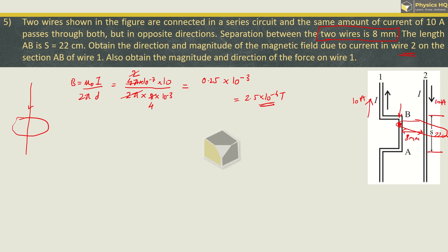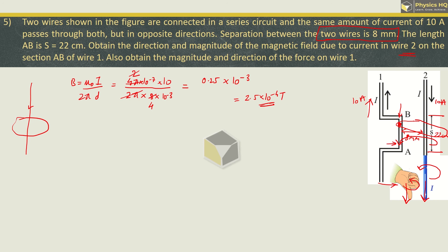What is the direction of this magnetic field? For this, we use the right hand grip rule. You hold the conductor in your right hand such that the thumb points in the direction of the flow of current, and the curled fingers show the direction of the magnetic field. At the point on wire AB, the magnetic field from the first wire is directed inwards — into the page or screen.